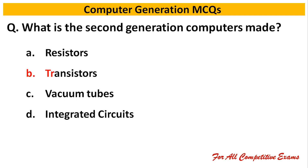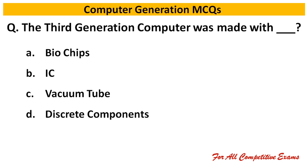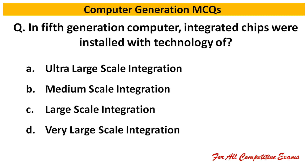Next question: What is the second generation computer made of? Right answer is transistor. Next question: The third generation computer was made with dash. Right answer is IC.